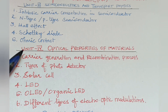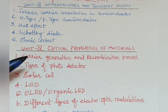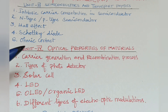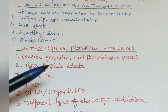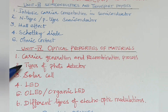The fourth unit is Optical Properties of Materials, which is common to CSE and IT. Types of Photo Detectors — there are three types: photo emissive, photo conductive, and photo voltaic. Each type is a separate 16-mark question.